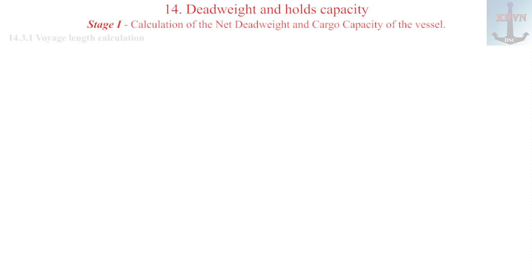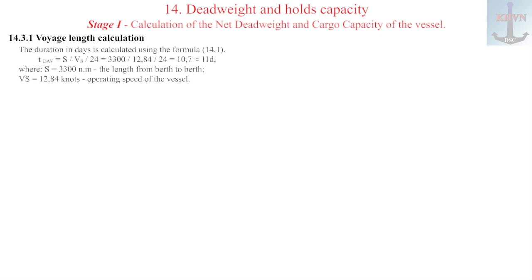14.3.1 Voyage length calculation. The duration of the voyage in days is calculated using the formula 14.1. Calculation result equals approximately 11 days, where S equals 3300 nautical miles, the length from berth to berth, and Vs equals 12.84 knots, operating speed.